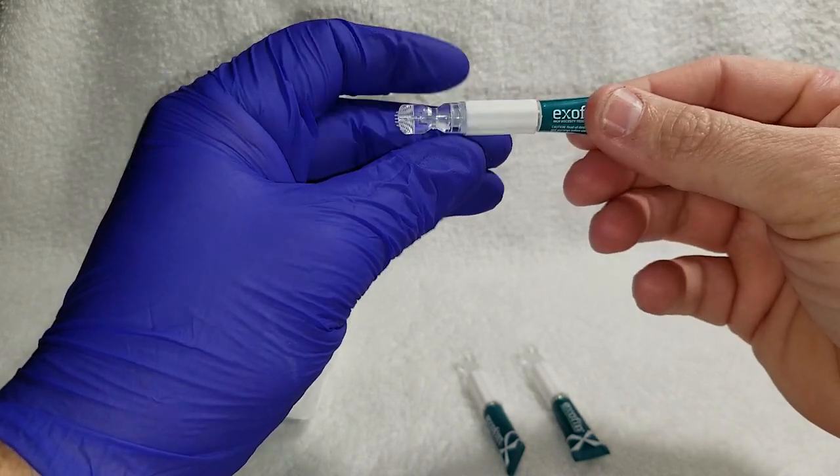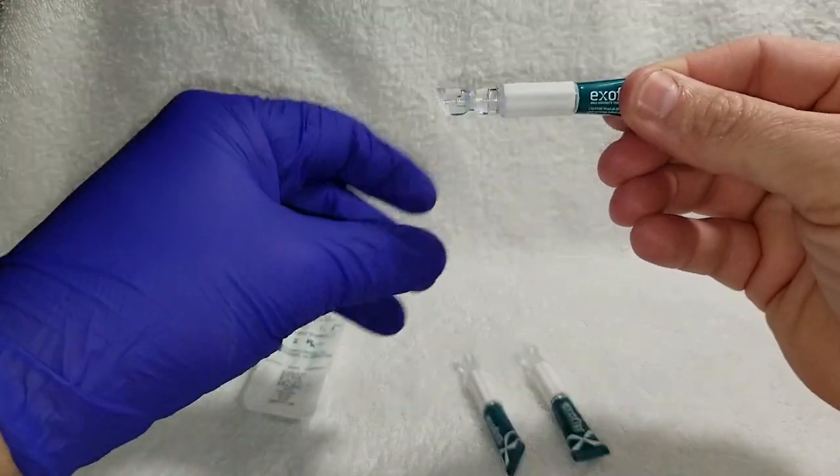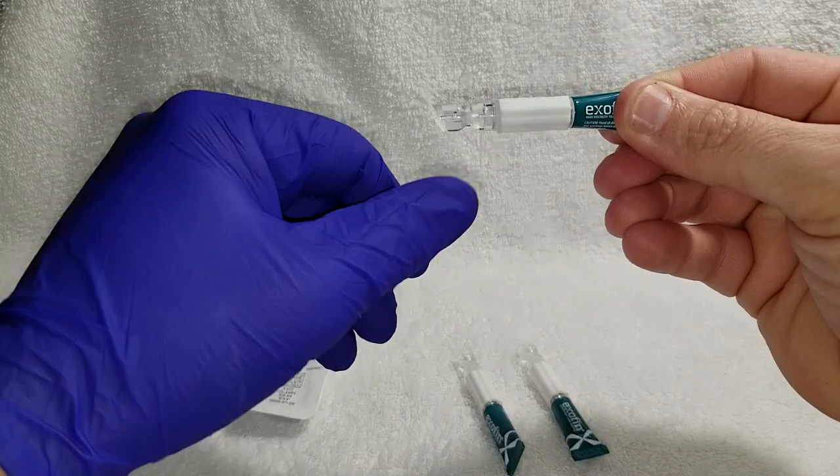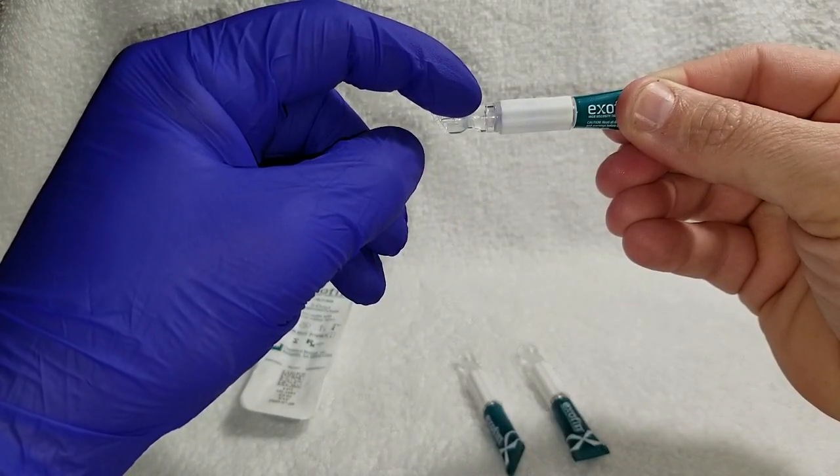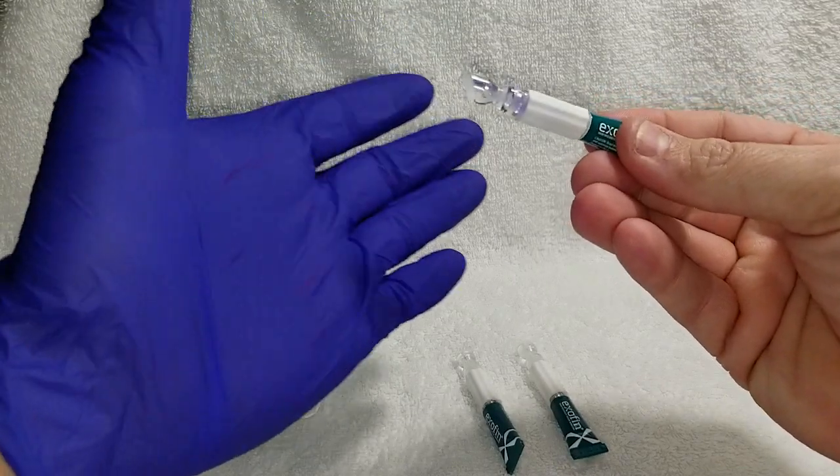You're going to prime it sideways at the X and gently squeeze it like your toothpaste at home until you see the purple adhesive. As soon as you see the purple adhesive, stop squeezing.